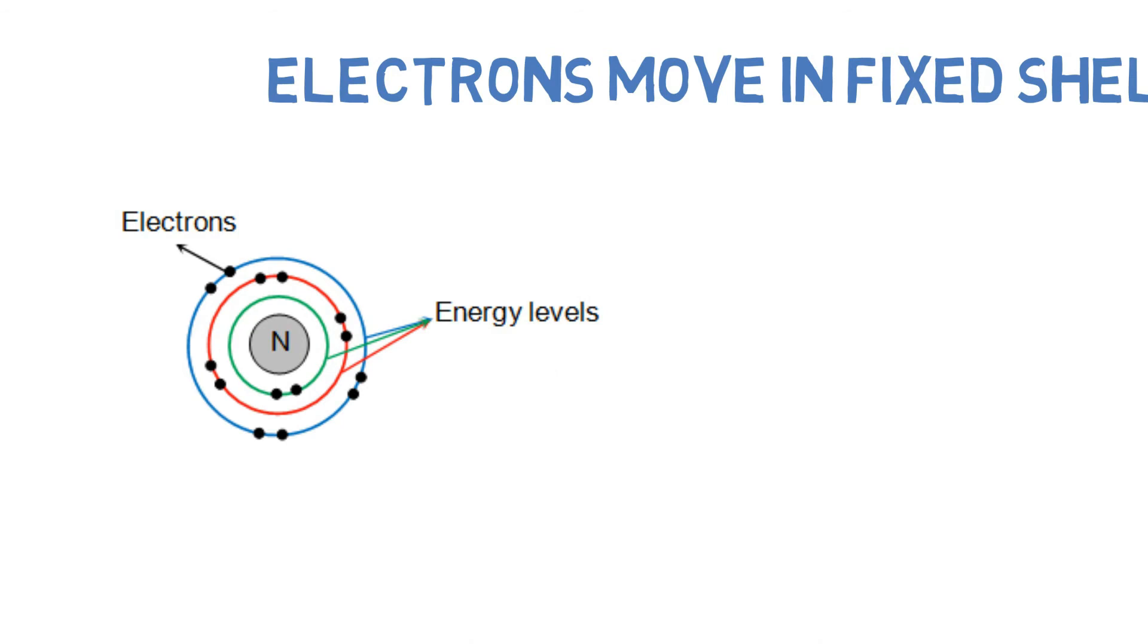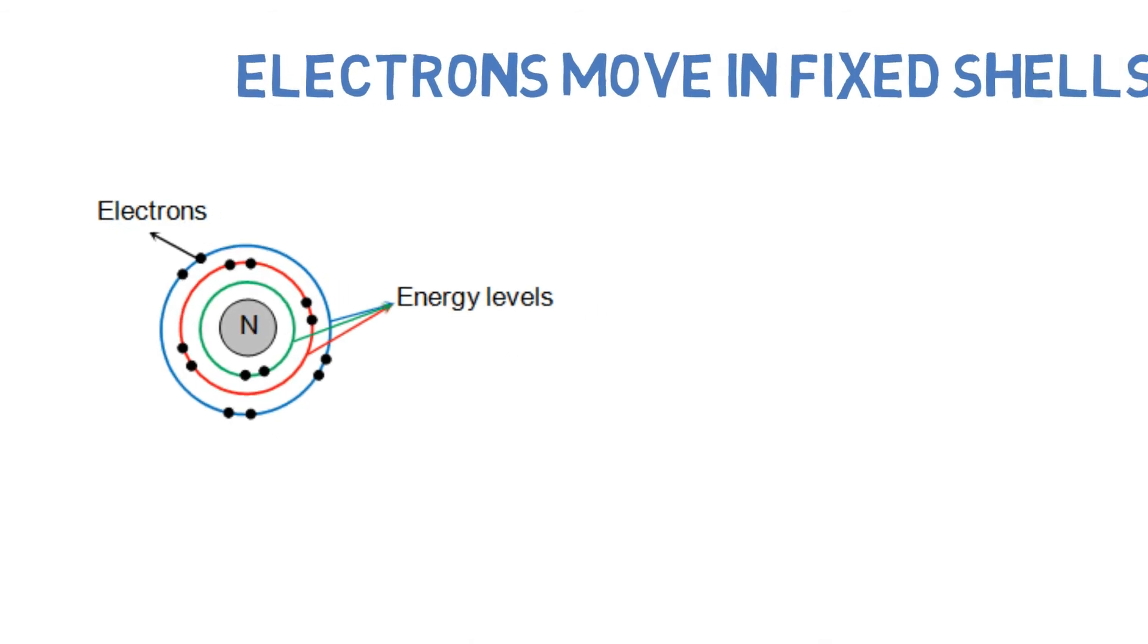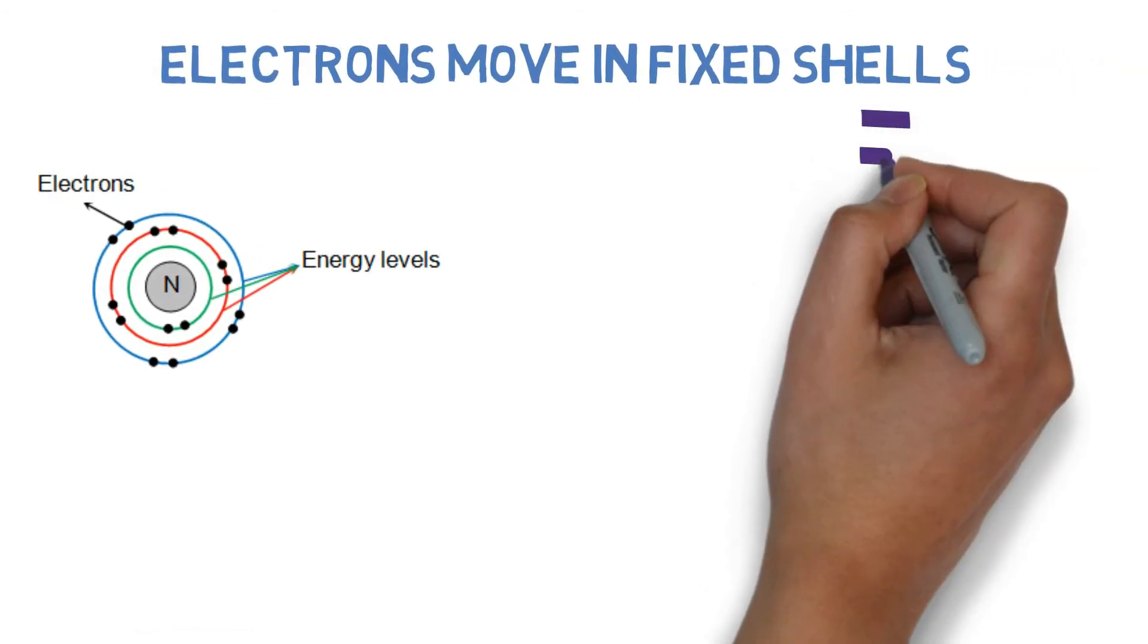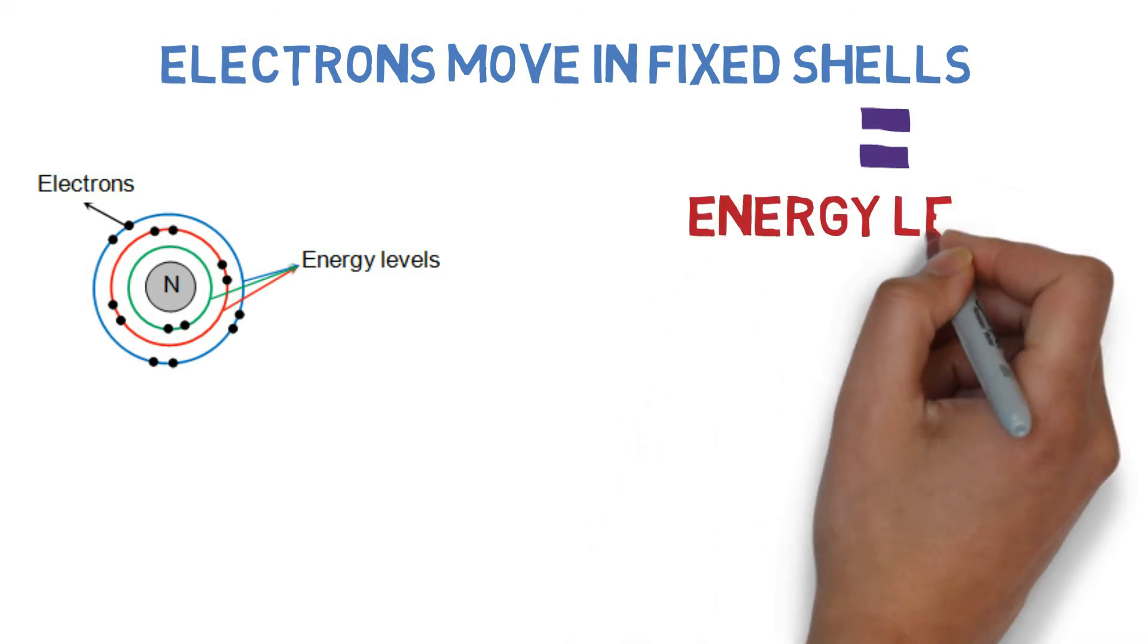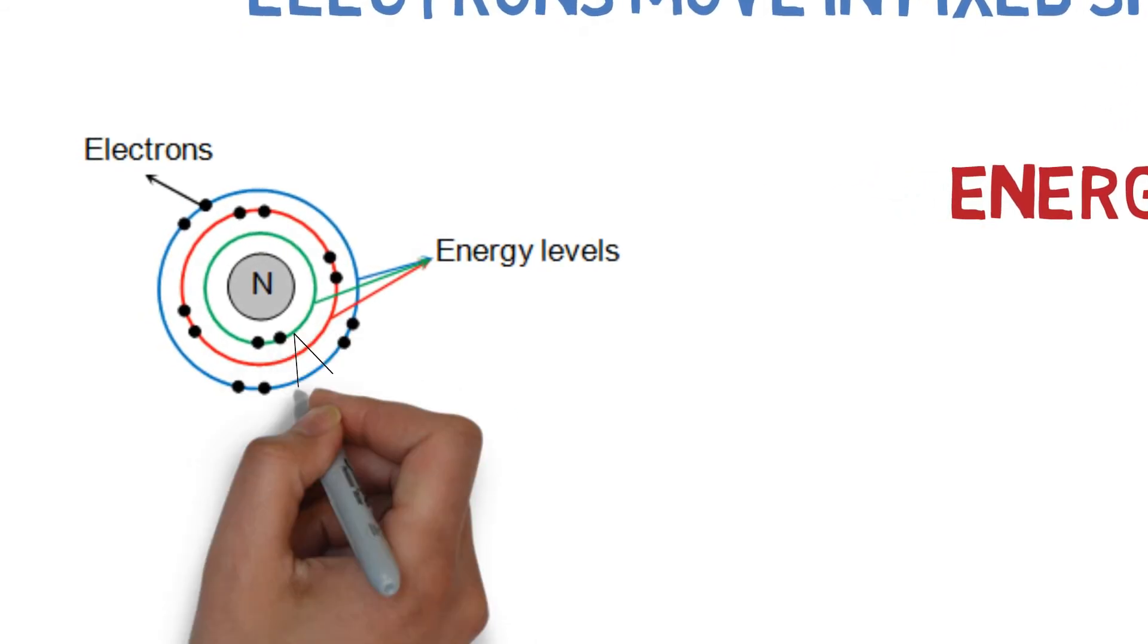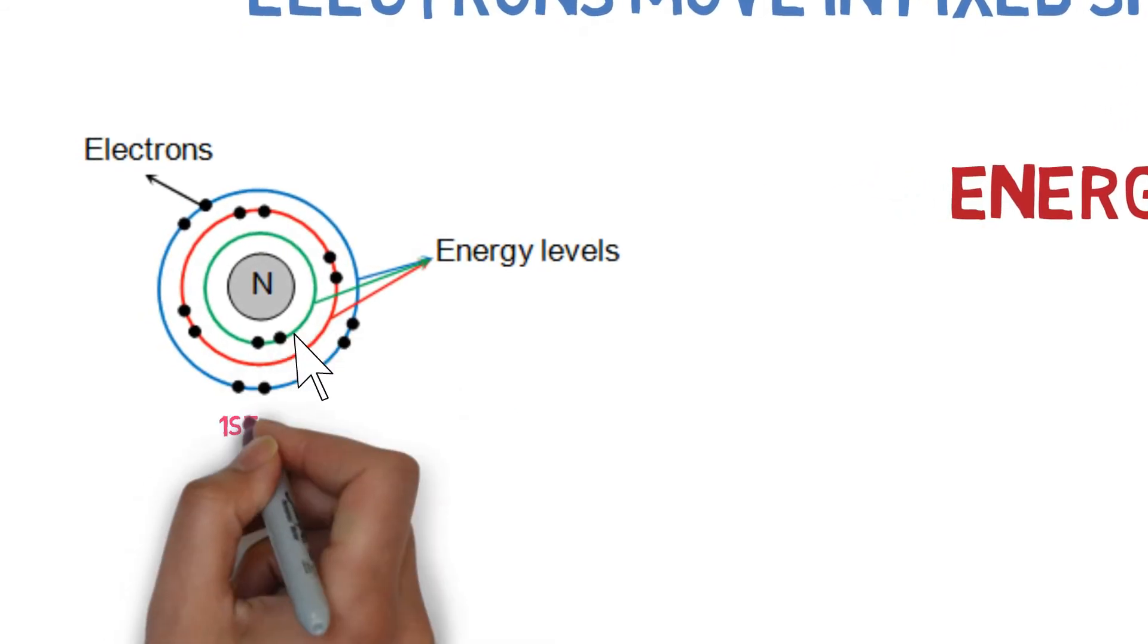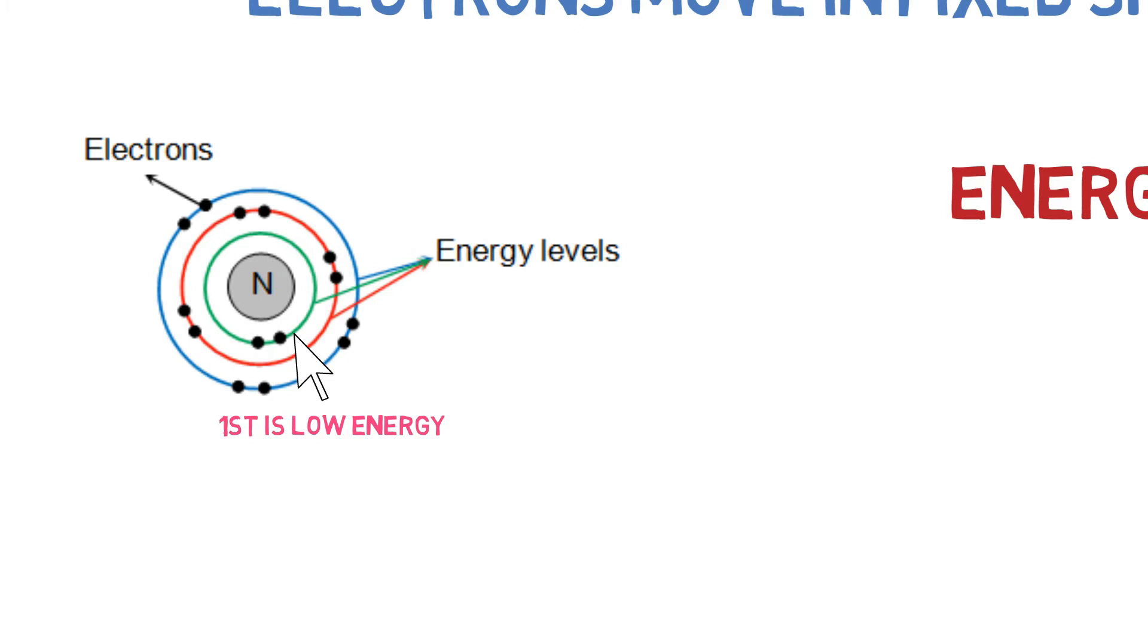They move in fixed shells around the nucleus and these shells are also called energy levels, which means that the shell that is closer to the nucleus is in lower energy. The shell that is farther away from the nucleus has higher energy.